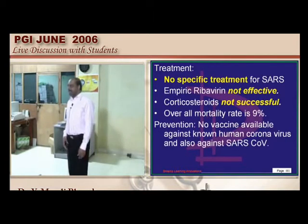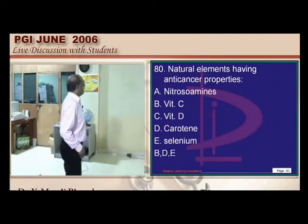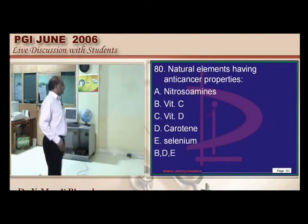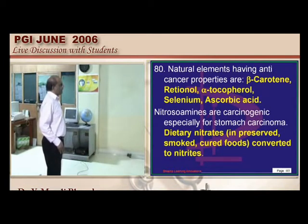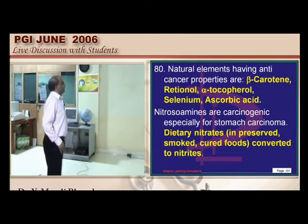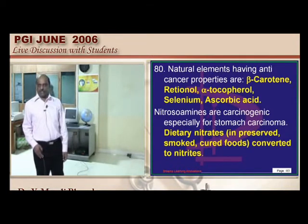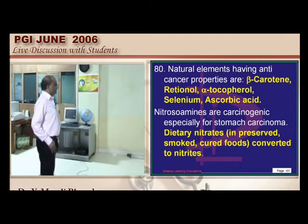Anti-cancer agents in food include vitamin C, vitamin D, selenium, and ascorbic acid. Dietary nitrates are converted to nitrites, which are then converted into nitrozo compounds that are carcinogenic.